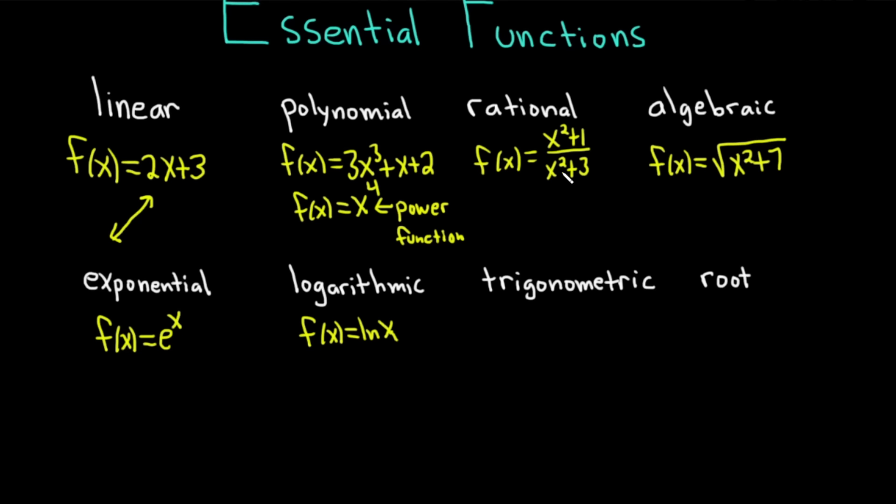Then you have the trig functions. We call those trigonometric functions. For example, f of x equals sine x, or maybe f of x equals cosine x. These would be the trig functions that you see in mathematics. We also have root functions. Things like f of x equals the cube root of x would be a root function.